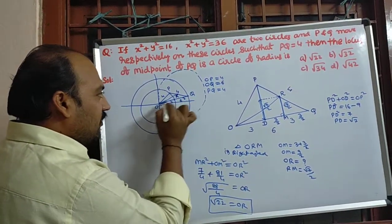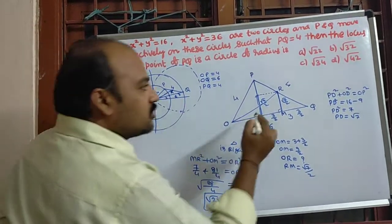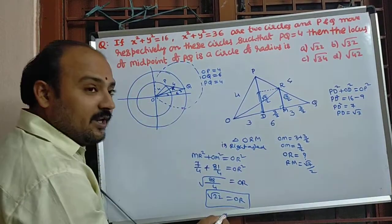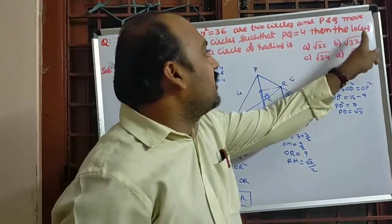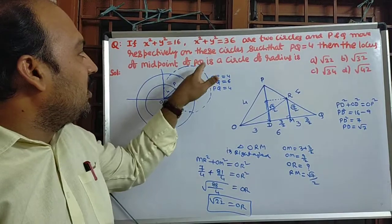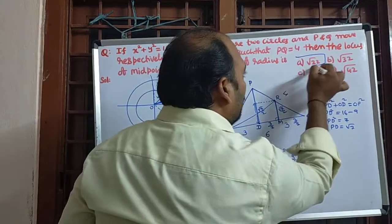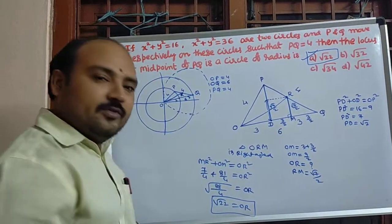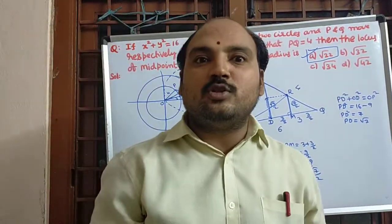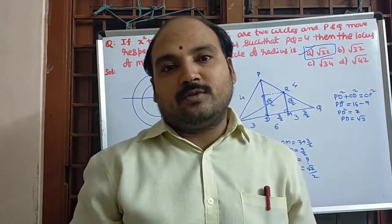OR means what? Radius of OR is equal to radius of required circle. From this diagram observe carefully, so here also OR value is radius. They are same, then the locus of midpoint of PQ is a circle of radius √22. So it is the first option. Thank you very much for watching my videos. Please do subscribe. Thank you very much.